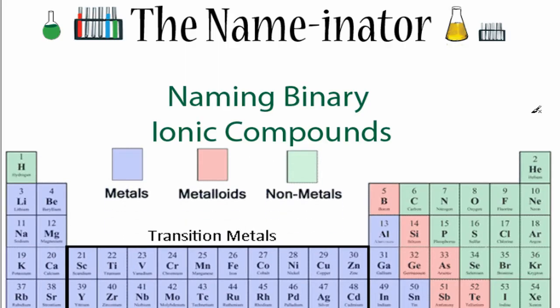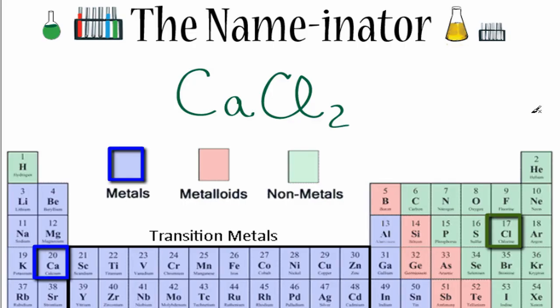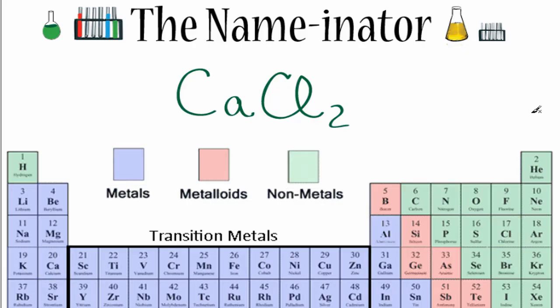Let's try CaCl2. On the periodic table, we find Ca and then we find Cl. We can see that Ca is a metal and Cl is a nonmetal. When we have a metal and a nonmetal, that's going to be an ionic compound. And since we only have two different types of elements, Ca and Cl, it's going to be a binary ionic compound.